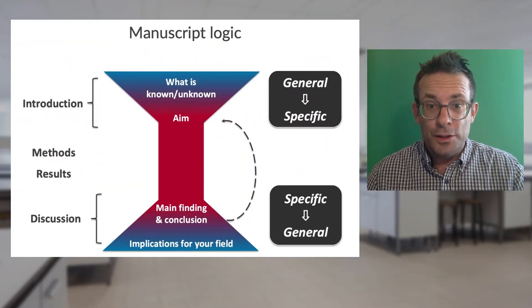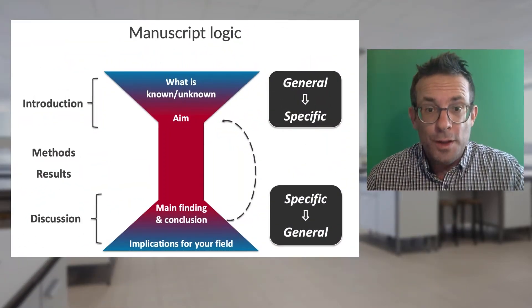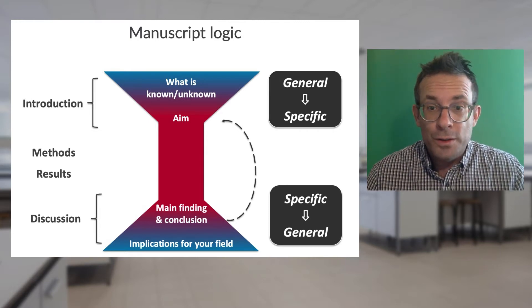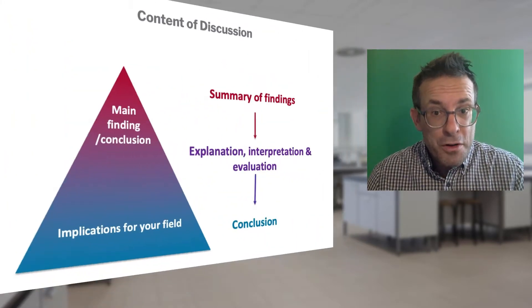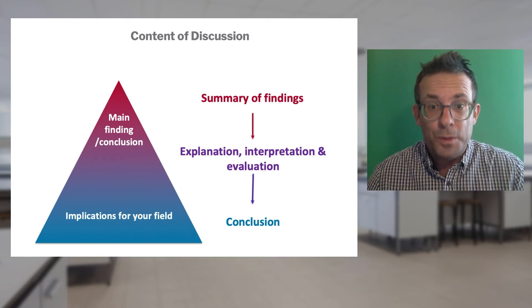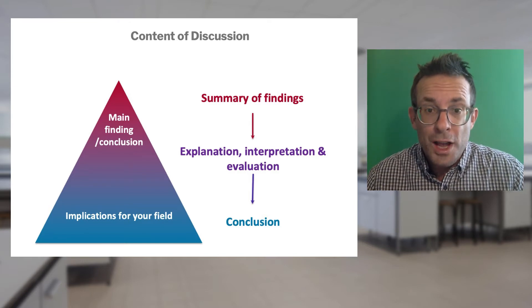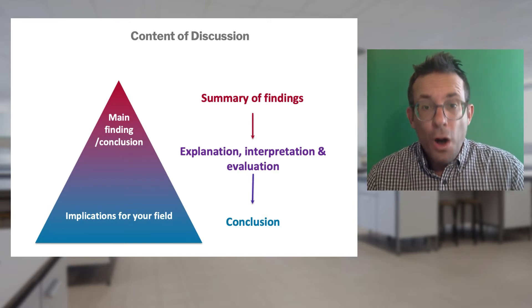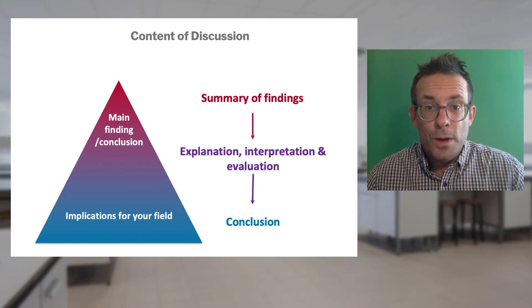Now remember that hourglass shape that summarizes the overall shape of an academic paper. You're now going to start off into the pyramid shape of your discussion section, starting specific and getting more and more general as you build out on the significance of the main results from your study.